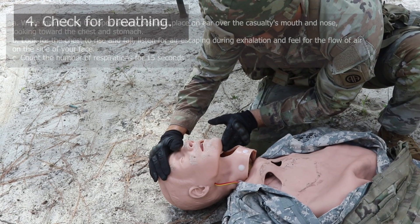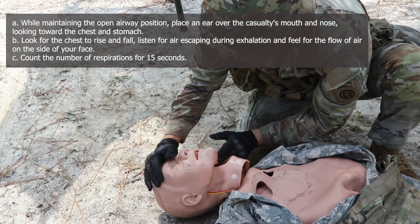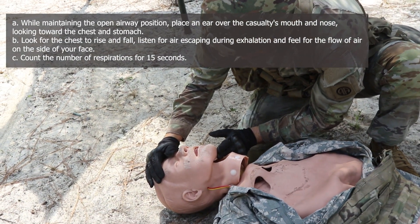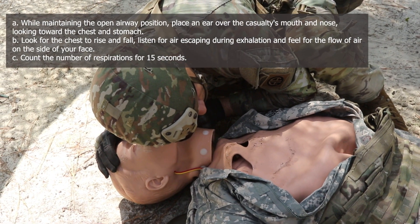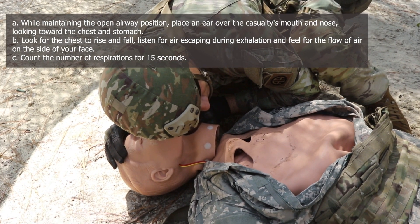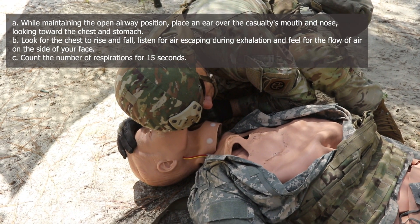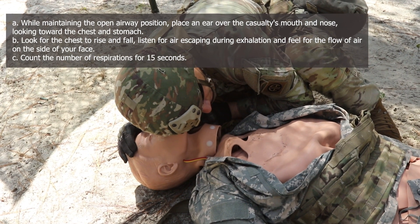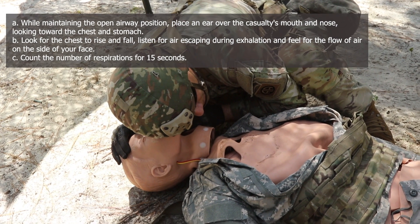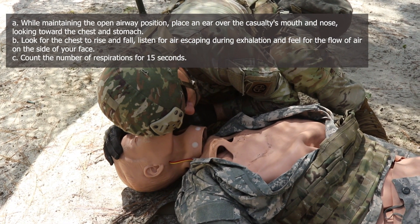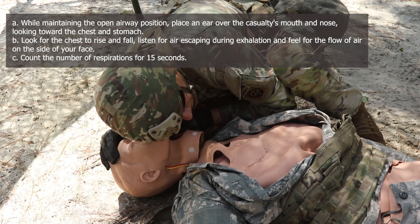Next, check for breathing. While maintaining the open airway position, place an ear over the casualty's mouth and nose, looking toward the chest and stomach. Look for the chest to rise and fall. Listen for air escaping during exhalation. Feel for the flow of air on the side of your face. Count the number of respirations for 15 seconds: one, two, three, four. After 15 seconds, the grader will state the casualty is not breathing.